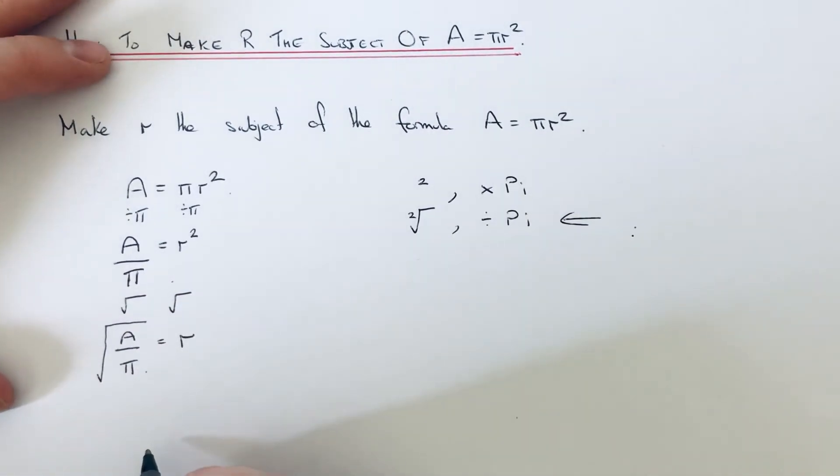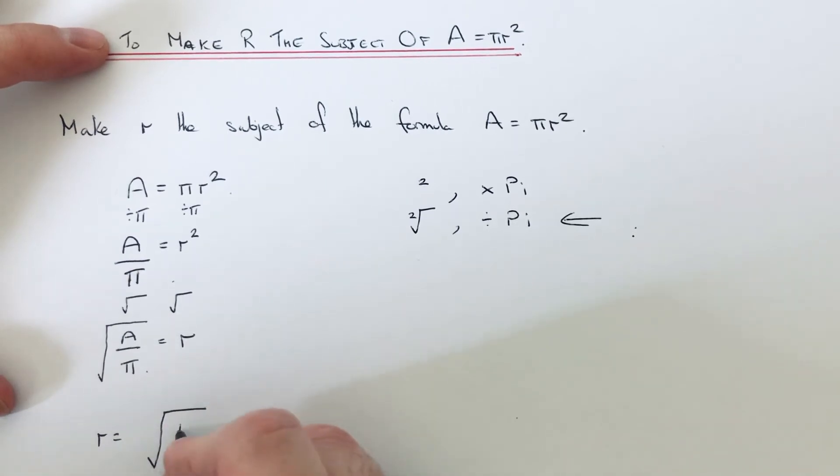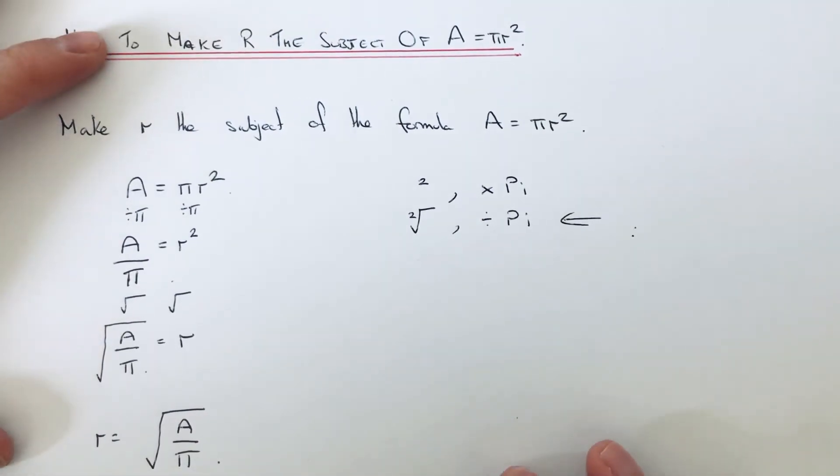And we just need to now write this formula out with R on the left side rather than on the right side. So it will be R equals the square root of A over pi, and R is now the subject of the formula.